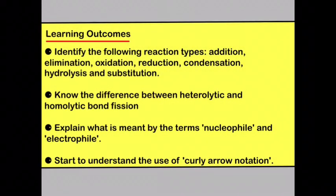So you should now be able to identify the following reaction types: addition and elimination, oxidation reduction, condensation and hydrolysis, and substitution. You should know the difference between heterolytic and homolytic bond fission. You should be able to explain what is meant by the terms nucleophile and electrophile, and you should start to understand the use of curly arrow notation.